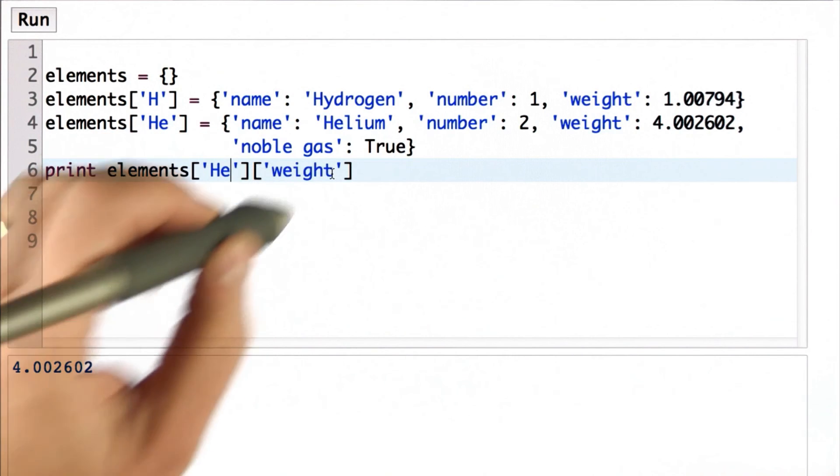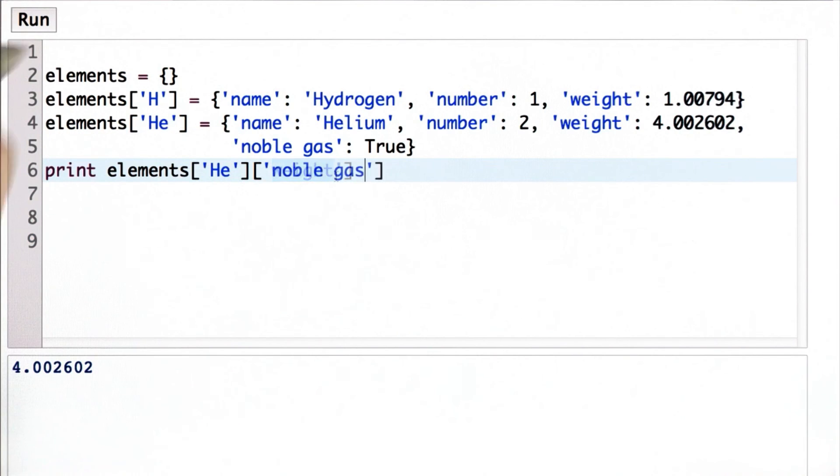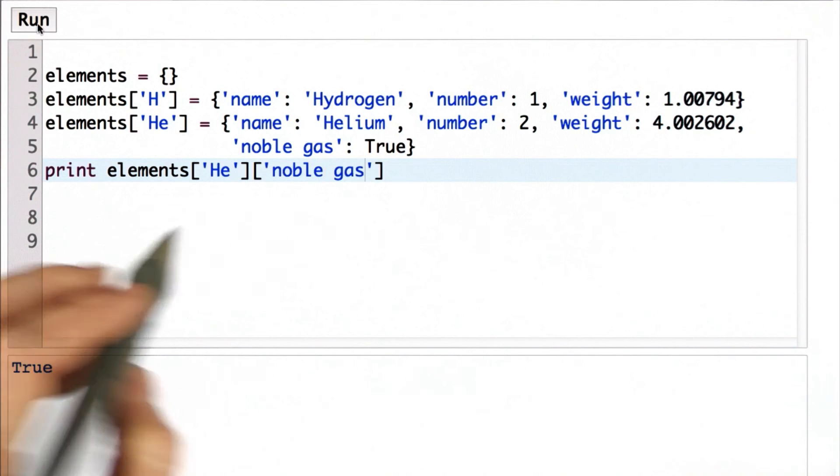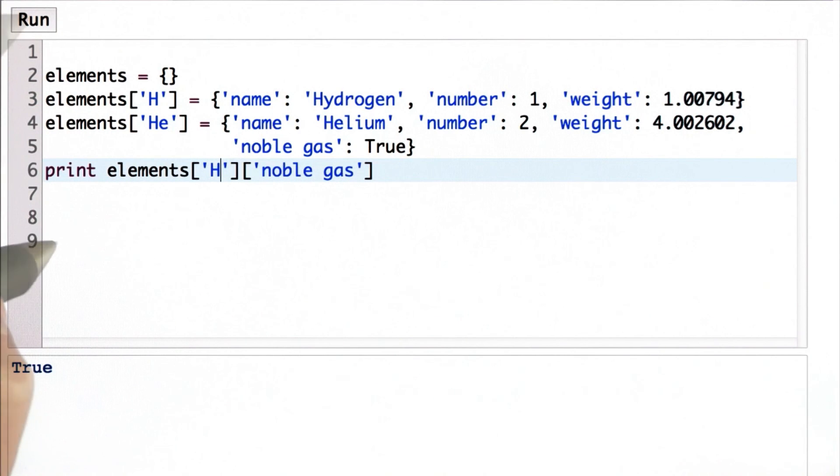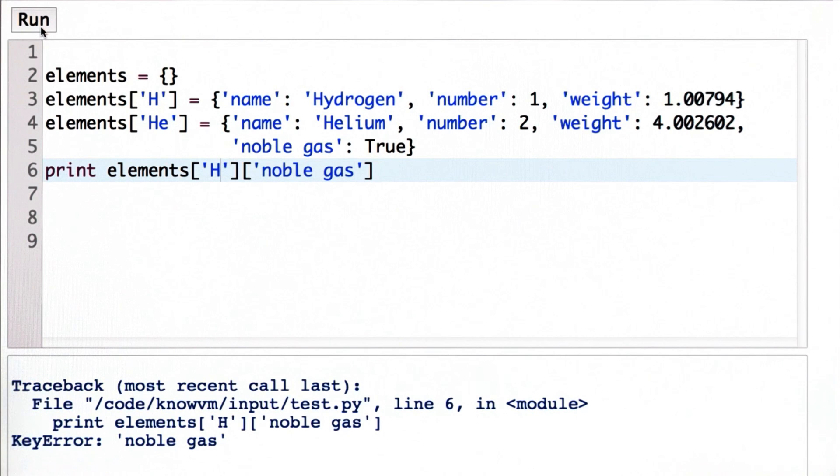If we look up the noble gas property, we get true for helium. What's going to happen if we look it up for hydrogen? So here we get an error. And we get the same error that we got before when we tried to look lithium up in the elements that didn't include lithium as a key. We're looking for the key noble gas, but it doesn't exist.